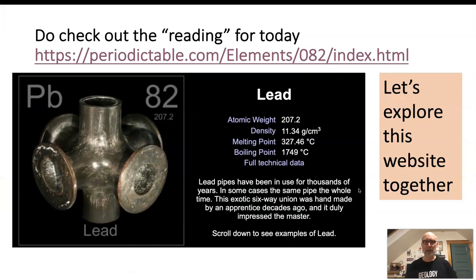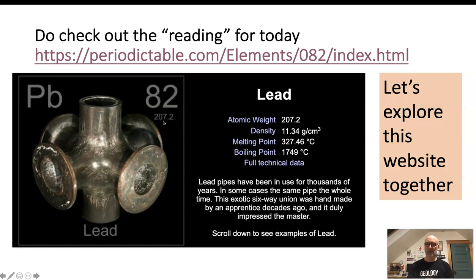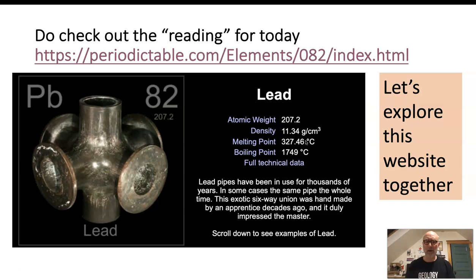Let's have a look at lead in Ted Gray's website — I really encourage you to check out the reading for today. Here's that soldered joint, here's the symbol PB for plumbum. Lead has 82 protons in the nucleus, and a total nuclear mass of 207. With such a high atomic weight, it's quite dense — a little more than 11 times the density of water. It has a rather low melting point: 327 degrees Celsius. Water boils at 100 degrees Celsius, so in an open fire one can melt lead.